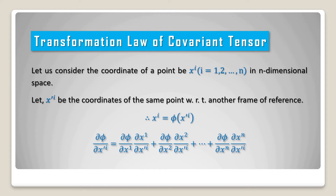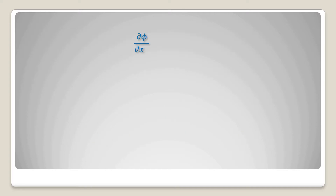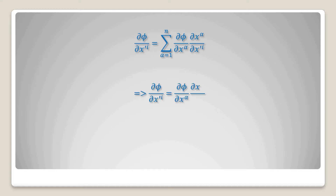Now this can be written as del phi by del x prime i equals del phi by del x1 into del x1 by del x prime i, plus del phi by del x2 into del x2 by del x prime i, and so on. In terms of summation, with alpha goes from 1 to n, this is del phi by del x alpha into del x alpha by del x prime i, which by using the Einstein summation convention gives del phi by del x alpha into del x alpha by del x prime i.